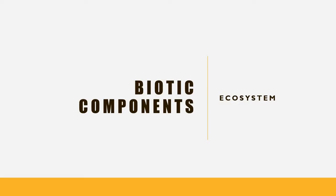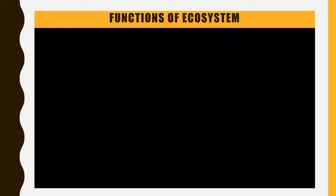Hello everyone. Today we are going to talk about biotic components of an ecosystem, where ecosystem is a combination of abiotic and biotic components. So today we will discuss only biotic components. Biotic means living organisms and abiotic means non-living things.